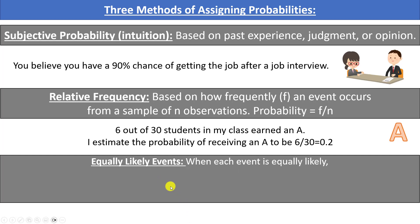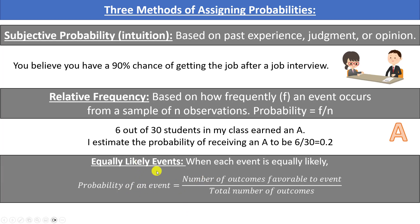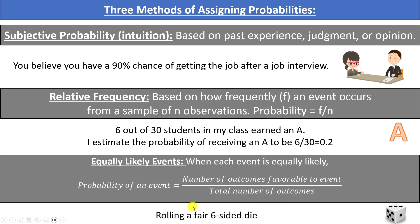The third method is equally likely events. When each outcome is equally likely, we find the probability of an event by taking the number of outcomes favorable to that event and dividing by the total number of outcomes. For example, with a fair six-sided die, if we want the probability of rolling an even number, we count the even outcomes — 2, 4, or 6 — which is 3, and divide by 6, giving 1/2 or a 50% chance.